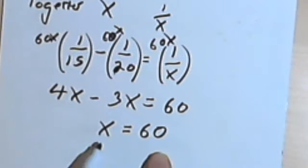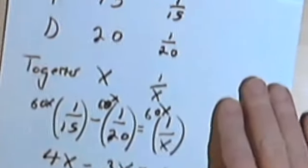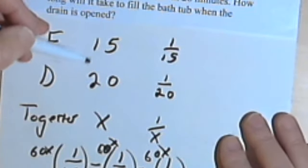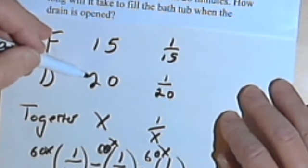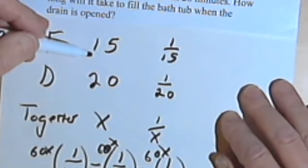So it will take sixty minutes, or one hour, to fill the bathtub with the drain opened. That seems to make sense because the drain is taking water out of the bathtub almost as fast as the faucet is putting it in. So it's going to take a while. So our answer is going to be sixty minutes, or one hour.